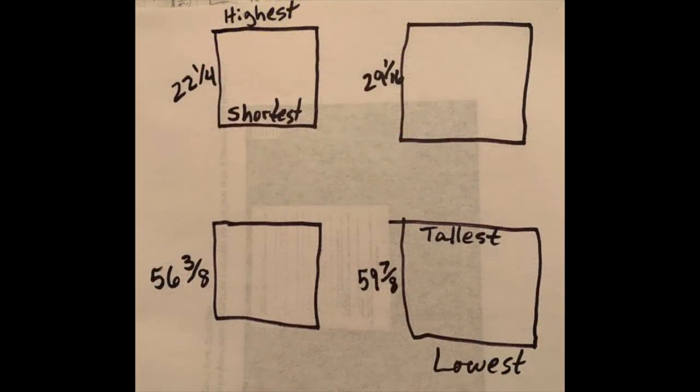The first thing you want to do is figure out where your highest grade and your lowest grade in your foundation is located. For us this was the upper left-hand corner for the highest and lower right-hand corner for the lowest. Wherever your grade is highest will be the location of your shortest post and wherever your lowest grade is located will be the location of your tallest post.